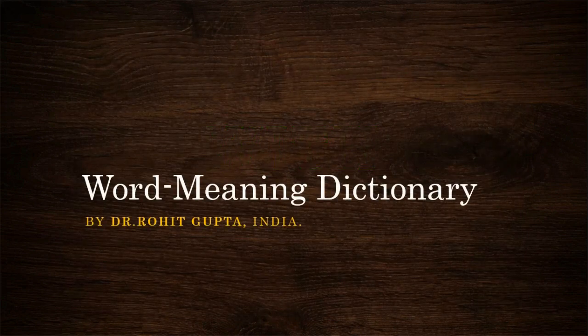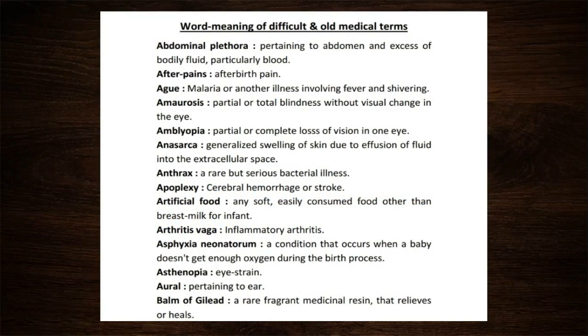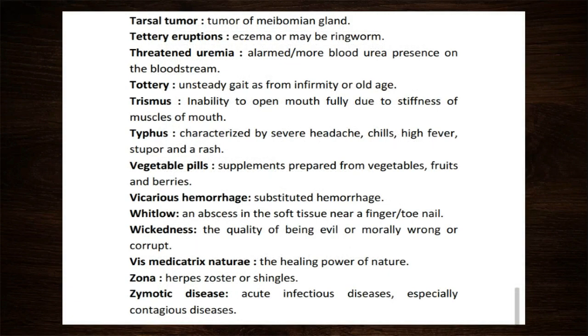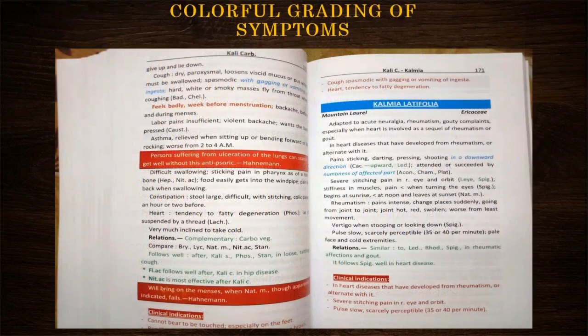With a word-meaning dictionary — some old and difficult medical terms are difficult to understand and find meanings for in today's medical dictionaries, so I tried to solve this problem in this new edition. For the first time, various colours are used to differentiate different aspects of symptomatology in materia medica: red for bold, blue for italic, and green for relationships and symptoms written in brackets, so that the reader gets the impact easily and it feeds into their mind.